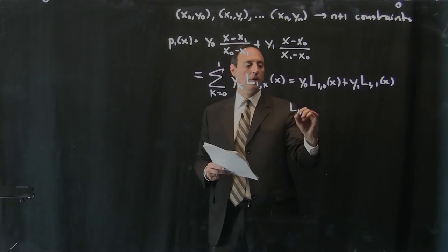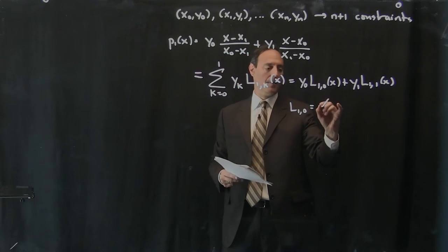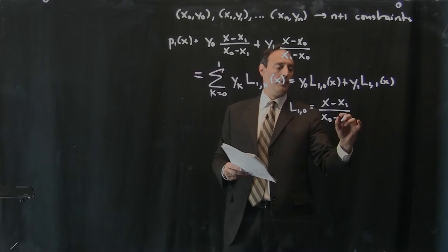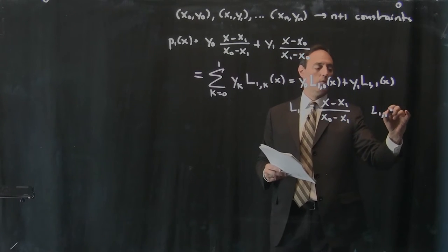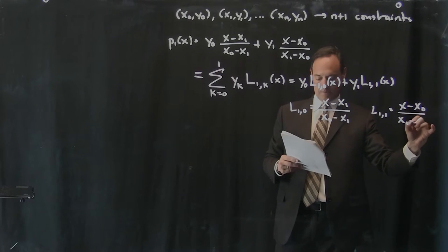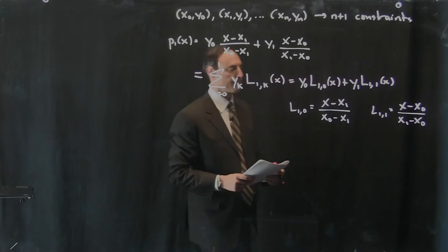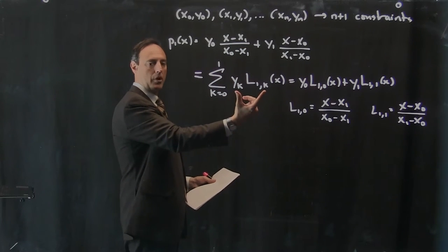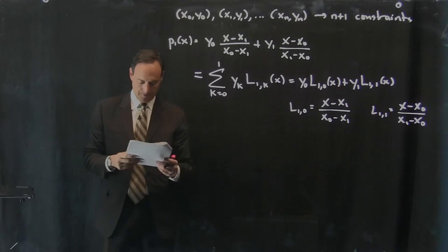Where the l1, 0 is exactly what we had there, x minus x1 over x0 minus x1, and l1, 1 was equal to x minus x0 over x1 minus x0. So this is going to be this very nice shorthand way to represent a Lagrange polynomial fit.